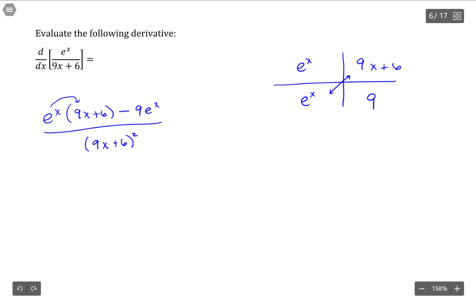You could potentially distribute e^x into the set of parentheses. And that would give you some values you could combine. So that would look like 9xe^x plus 6e^x minus 9e^x all over (9x plus 6) quantity squared.